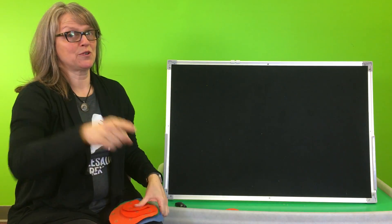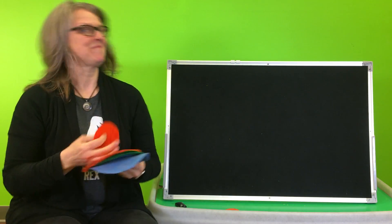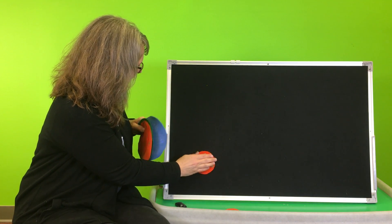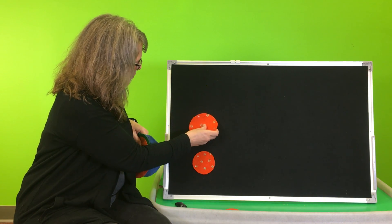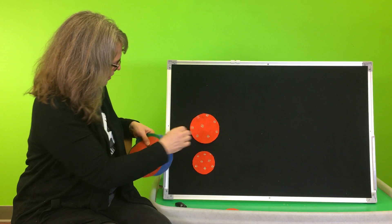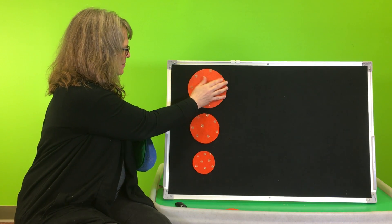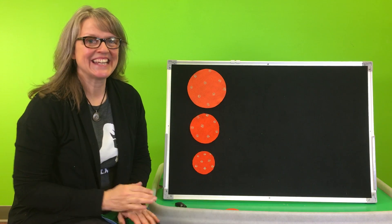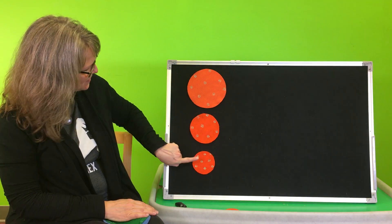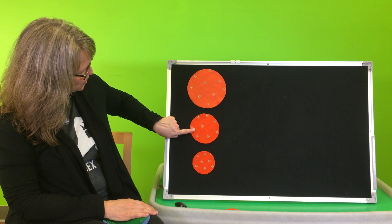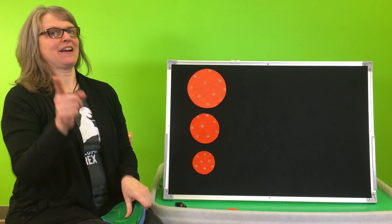Alright, you do it with your hands while I do it with my shapes. Ready? A little ball, a bigger ball, a great big ball, I see. Can you count the orange balls? One, two, three.